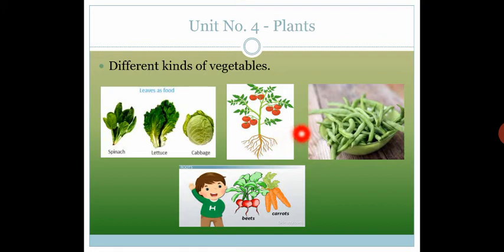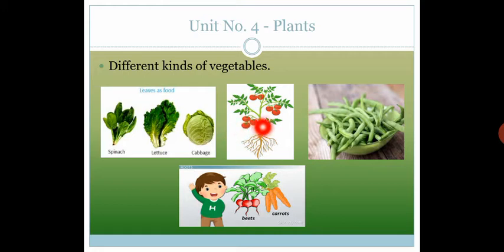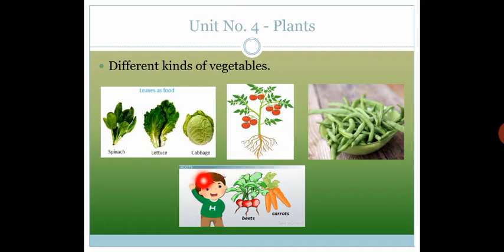Some vegetables grow on branches and stems. For example, tomatoes — یہ tomatoes جو ہیں وہ branches کے اوپر grow کرتے ہیں۔ And some vegetables are the stems of plants, for example green beans.